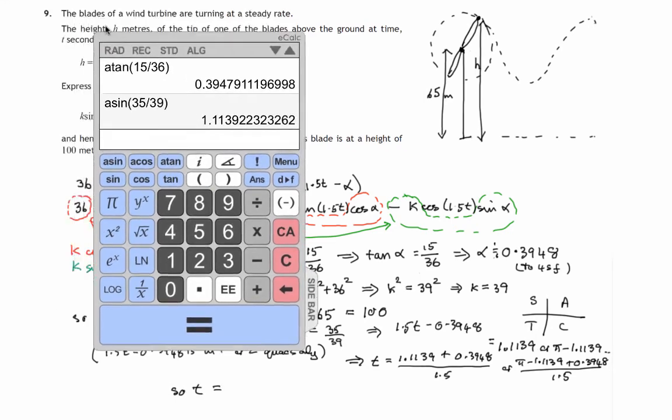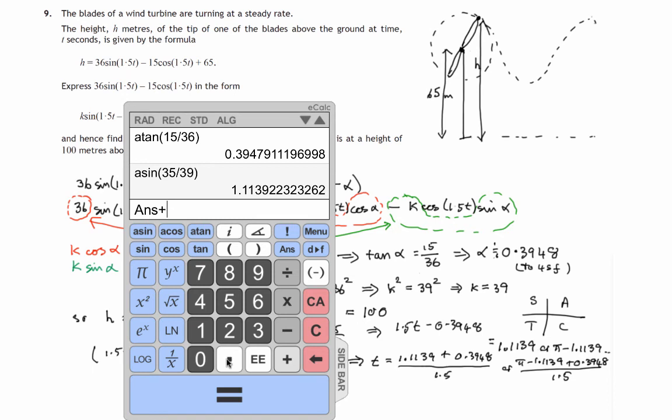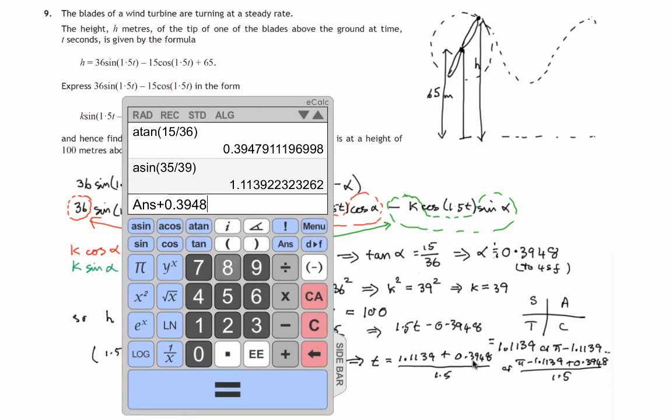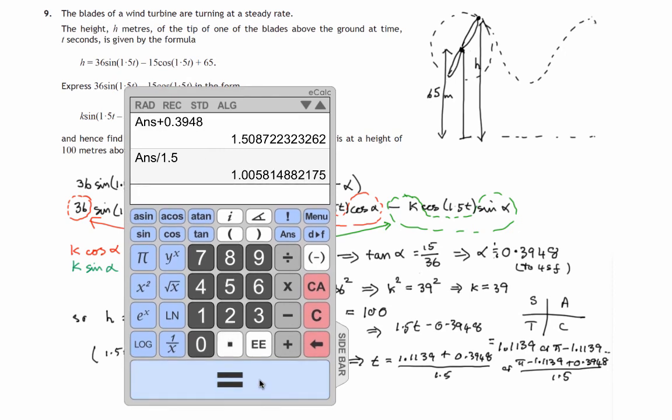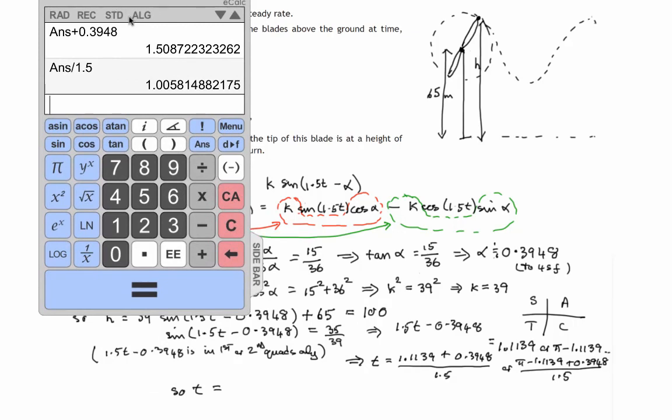There's our calculations which we'll have to do on the calculator. Let's do 1.1139, add 0.3948, and then whatever that comes to we'll divide by 1.5. That gets us a value of 1.0058 and so on.